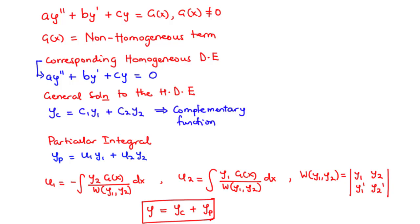The method of undetermined coefficients, which we discussed in the previous lesson, is mainly used to solve non-homogeneous differential equations where the non-homogeneous term — the function on the right-hand side — is either a constant, a polynomial, an exponential function, a cosine or a sine function, or a linear combination of those functions.